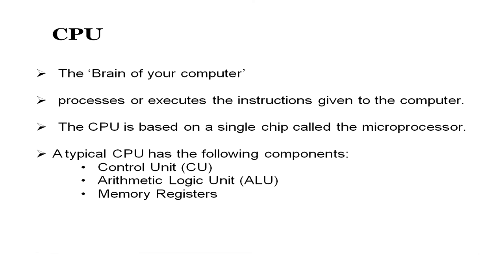Having covered input devices, you are now well aware of how data can be accepted from the user. The next step is processing of the data. To process data we have the central processing unit, or CPU, which is very commonly referred to as the brain of the computer. It processes and executes the instructions given to the computer. A CPU is based on a single chip known as a microprocessor, and computers which have microprocessors in them are microcomputers.